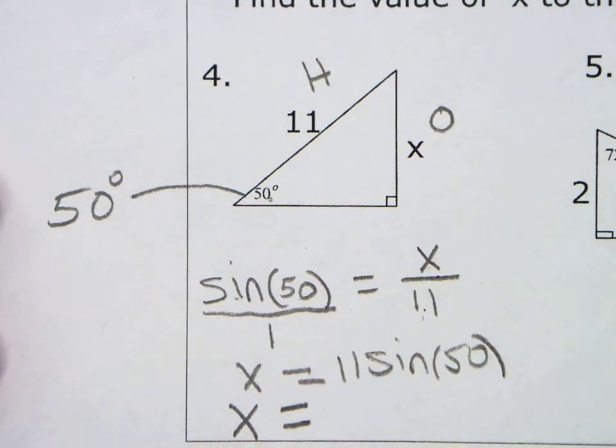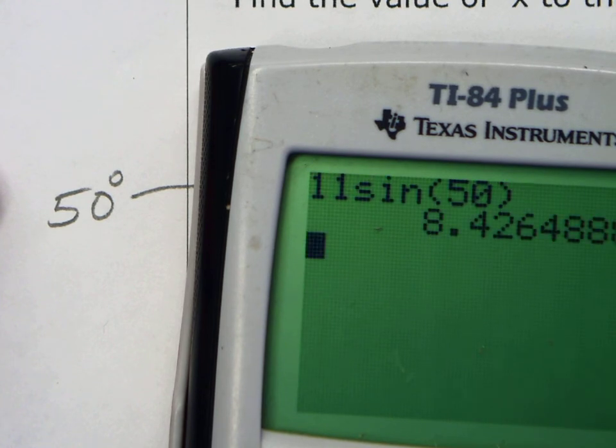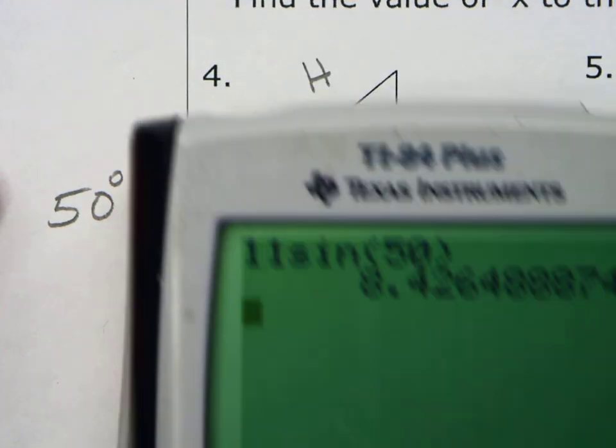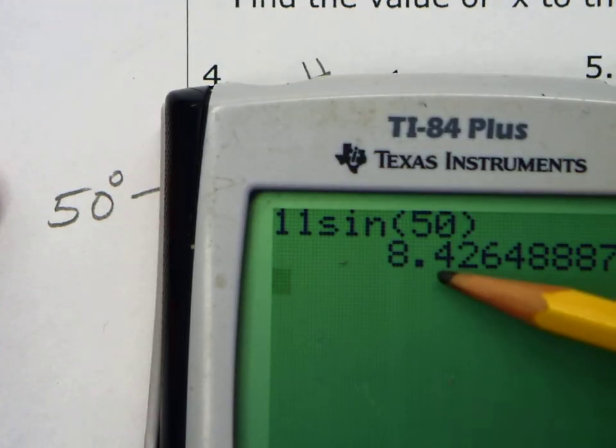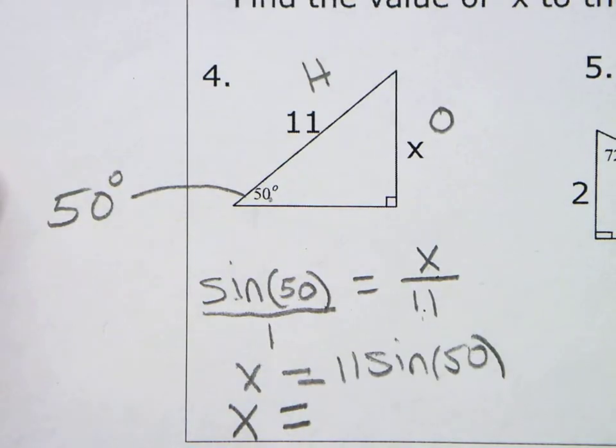And then I just put it in the calculator. Again, if your numbers are getting weird, check your mode. All right, 11 sine of 50. 8.43, nearest tenth. So that's one decimal, so 8.4. Okay. 8.4.